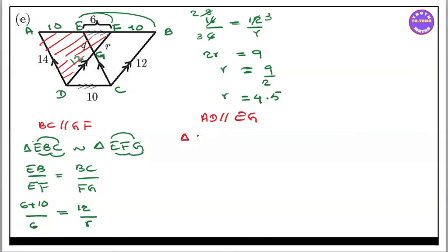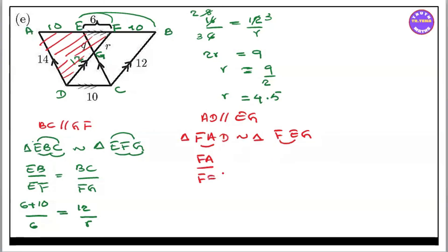So triangle A, G — triangle F, A, D similar to triangle F, E, G. So FA by FE equal to AD by EG. AD by EG. And F, D by — F, D by F, G. F, E by F, A. F, A. F, E — equal to AD by EG. AD by EG.